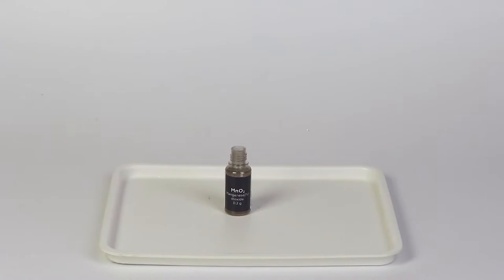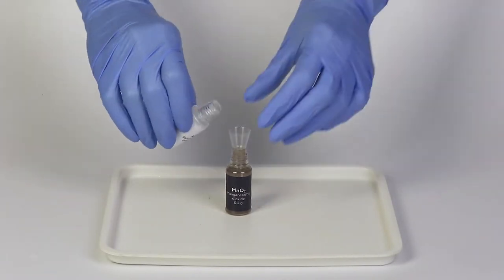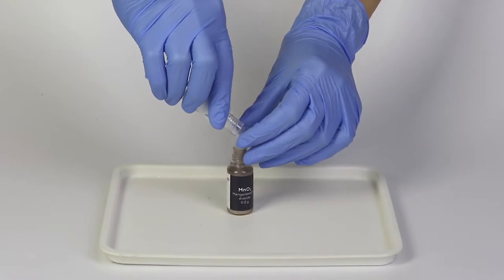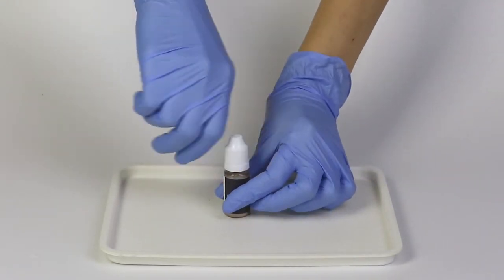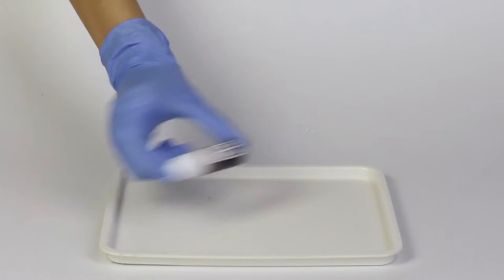Insert the plastic funnel into the bottle of Manganese Dioxide and pour one bottle of Sodium Chloride into it. Close the bottle with a cap and shake it vigorously for one minute.